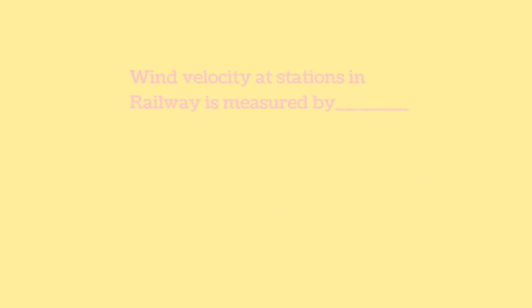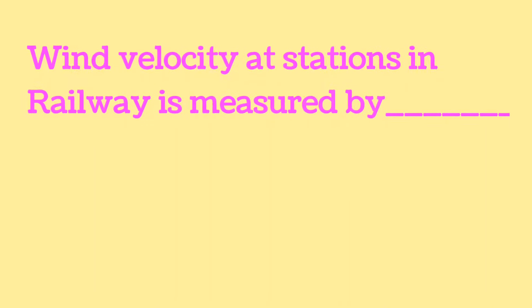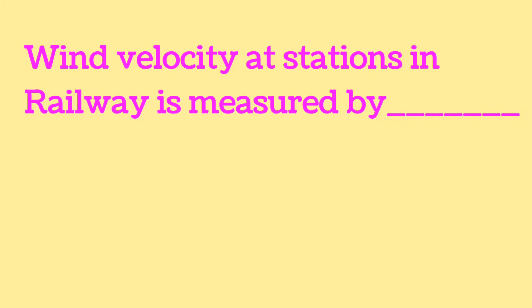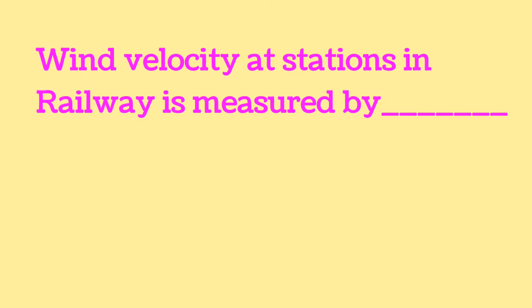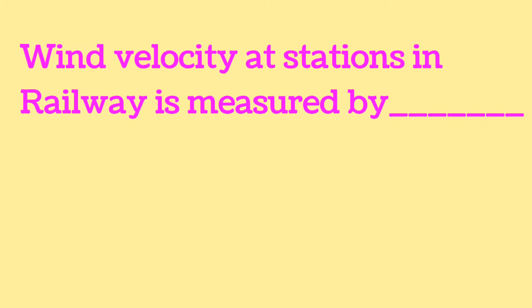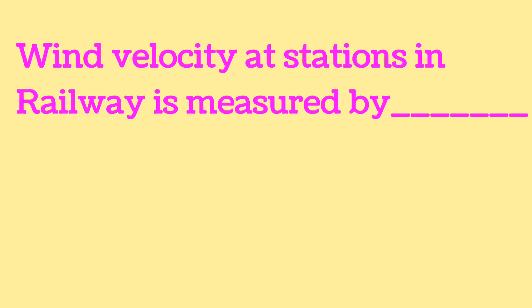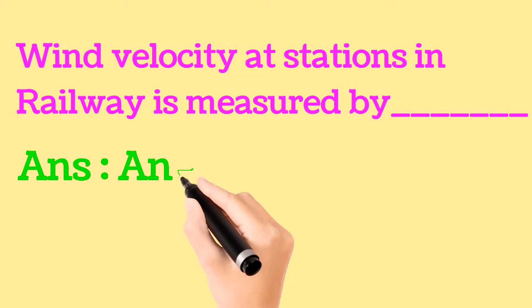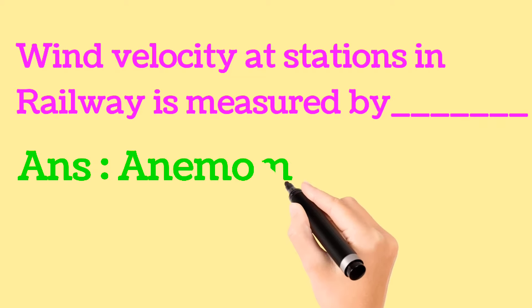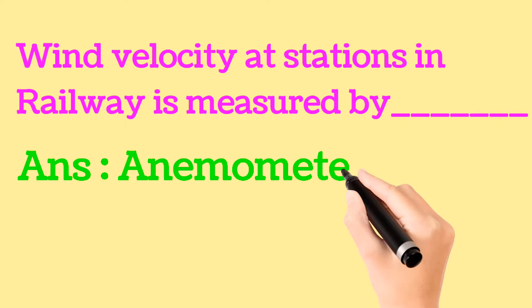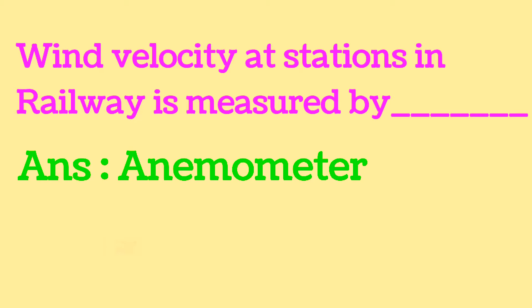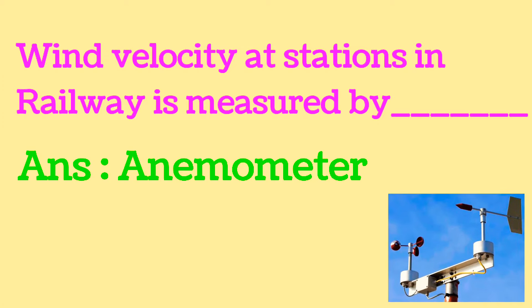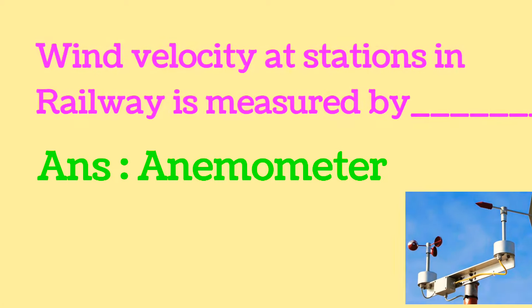Next question: What instrument is used by railways to measure wind velocity at stations? Normally this is not available at all stations, but it is available at major stations where wind velocity may increase, such as areas near the sea. The correct answer is anemometer. As we can see in the picture, the anemometer is the instrument used in railway to measure wind velocity.